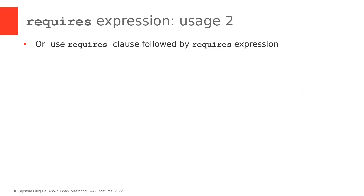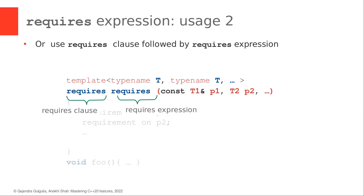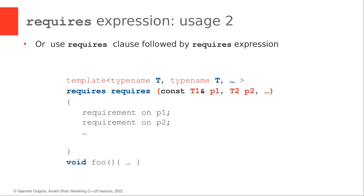Another usage of the requires expression is combining it with the requires clause. For example, the first requires keyword represents the requires clause, and then the second requires keyword followed by the parameter and the body represents the requires expression. After writing the parameter, we define the body of the requires expression where we place constraints on the template parameters. And then in the end we define the function, which in this slide is simply foo.